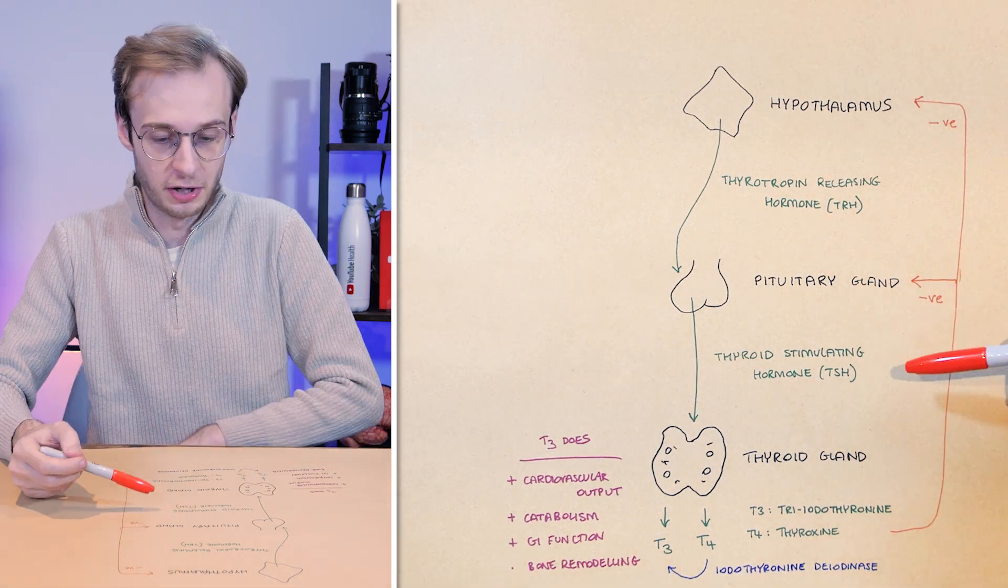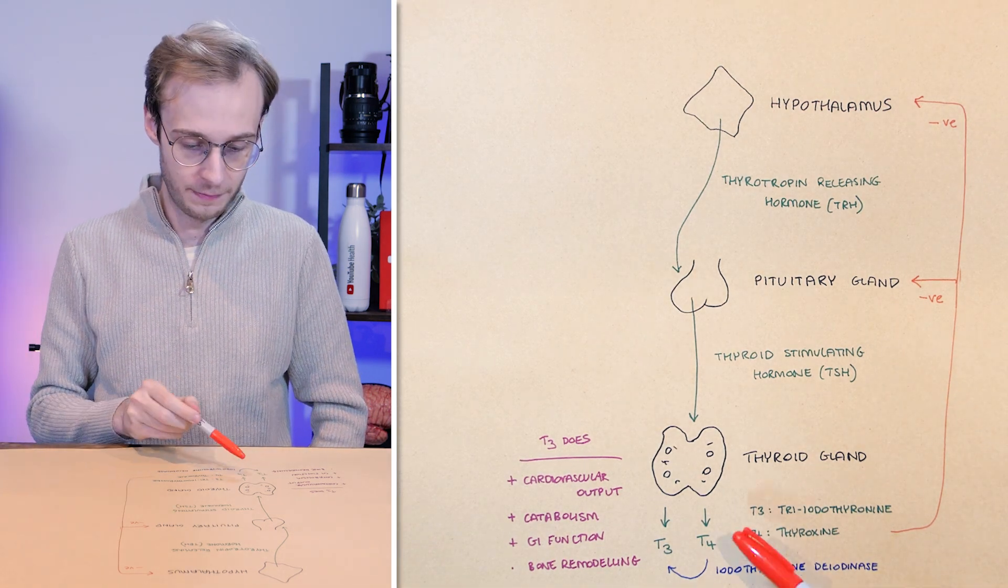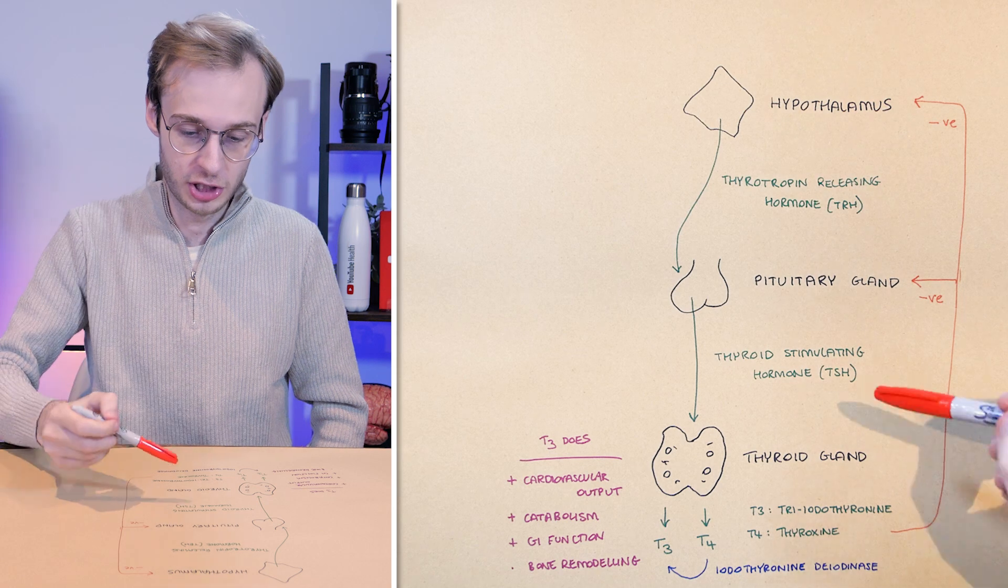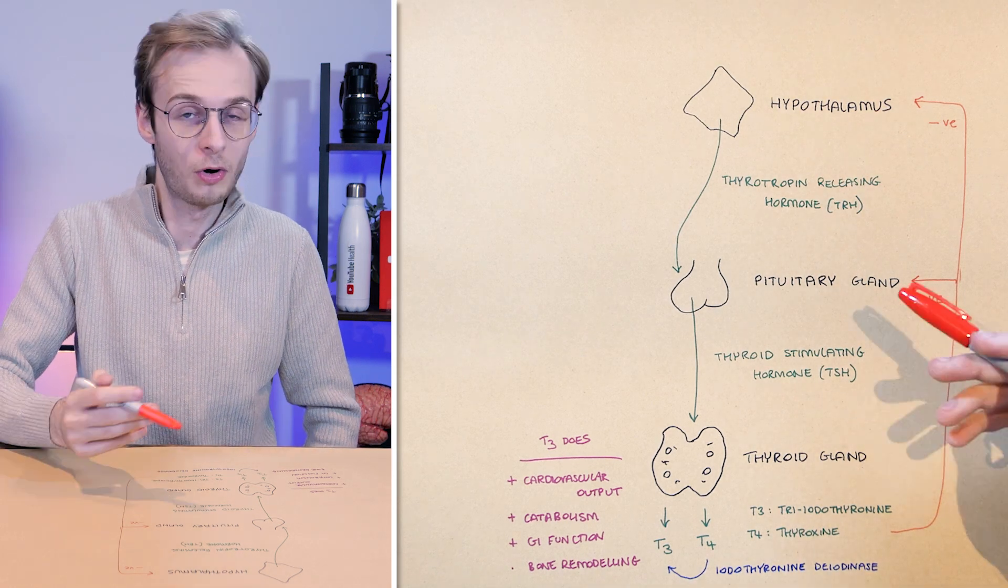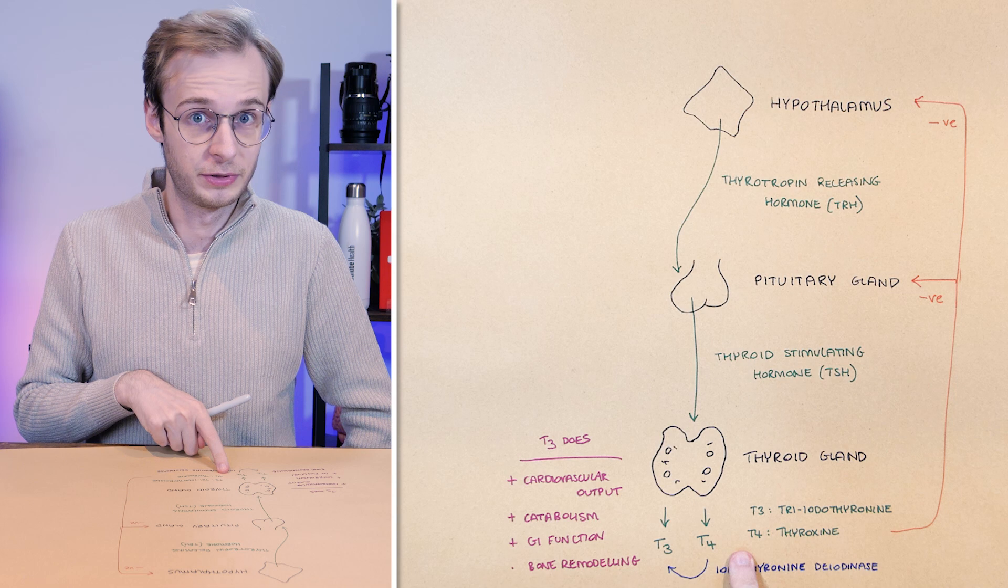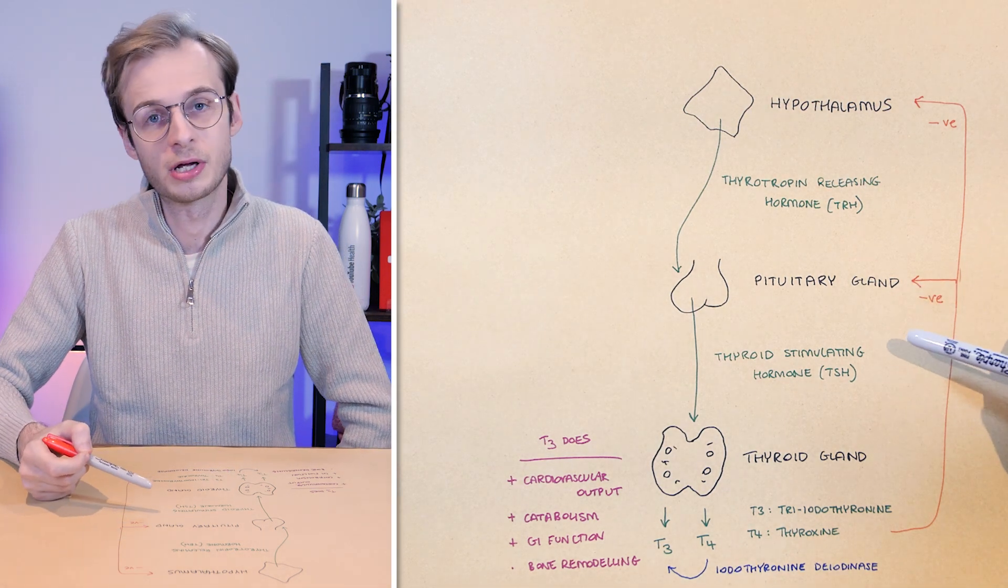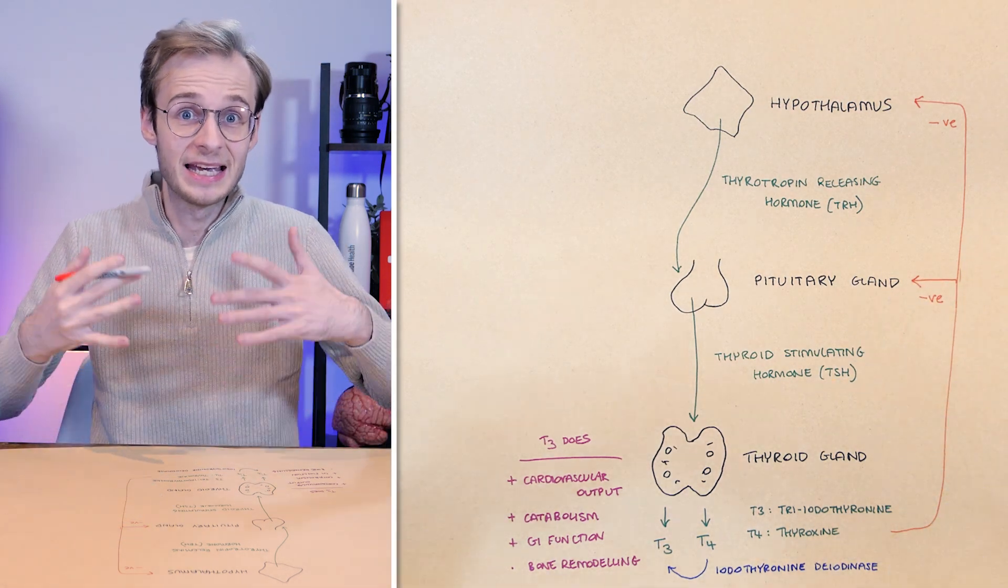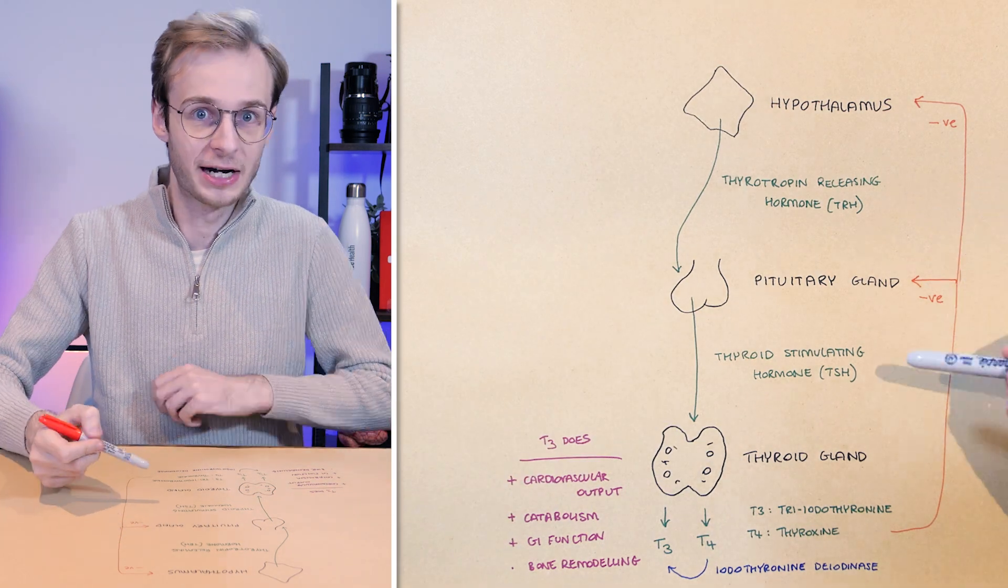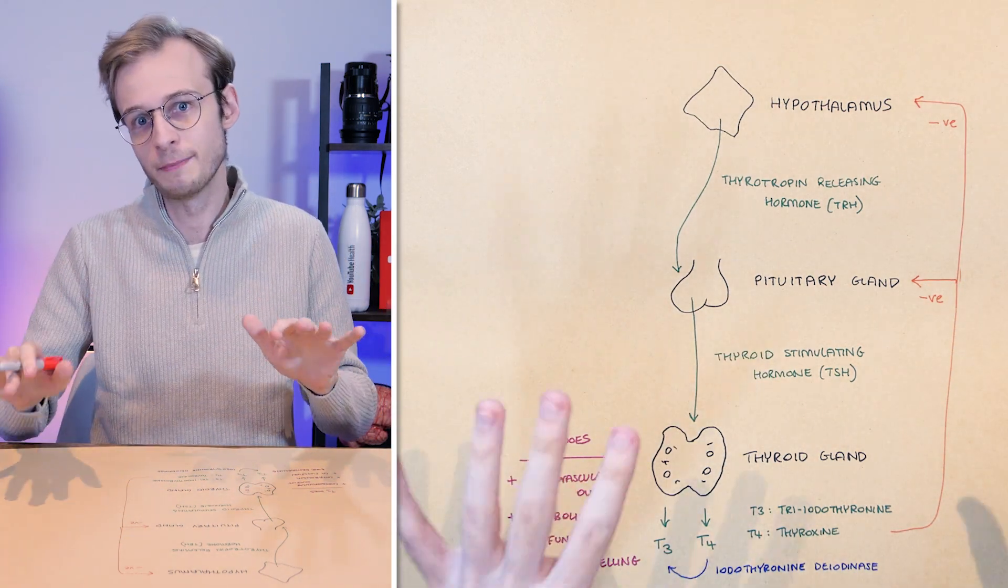Because the function of thyroid-stimulating hormone is essentially making T3 and T4. If you have enough or too much, you don't want to keep making more, or it will make the problem worse. Conversely, if you have very low levels of T3 and T4, both the hypothalamus and the pituitary gland will detect this and increase your levels of TRH and TSH to try and overcome the shortage. It's a delicate balancing act.